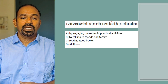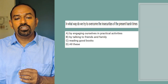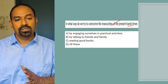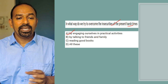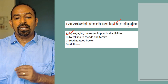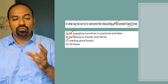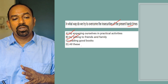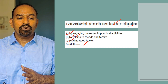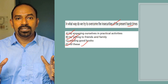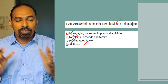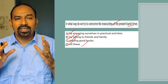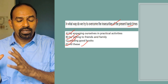Next question: In what way do we try to overcome the insecurities of the present harsh times? Options: by engaging ourselves in practical activities; by talking to friends and family; reading good books; all these. The right option is all these — these are the ways by which we can avoid present insecurities and the harsh realities of modern life.